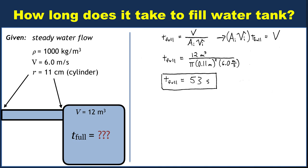That's pretty fast, considering that we had to fill a tank of 12 cubic meters. It's quite a bit of water, but it's also the case that we were dealing with a pretty big pipe. 11 centimeters cylindrical radius pipe is a pretty big sewer pipe, and we're shoving water through it at a rate of 6 meters per second. This thing fills up pretty quickly.